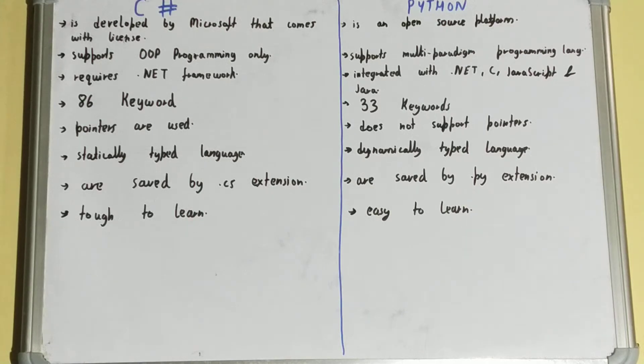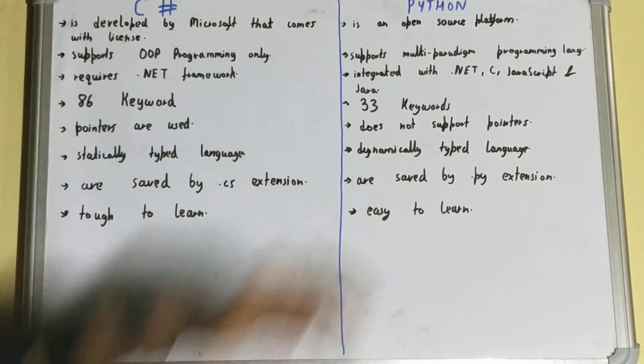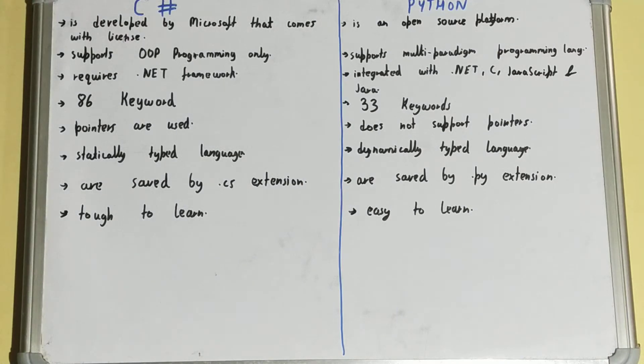C# is developed by Microsoft and comes with a license, so for using C# you need to buy the license from Microsoft. But Python is an open source platform, meaning anyone can freely download it and even use it for commercial purposes.